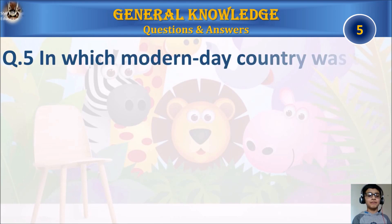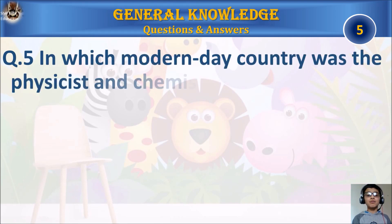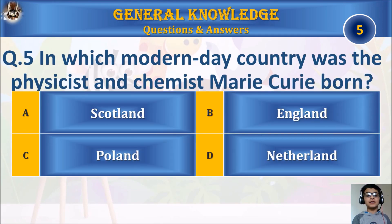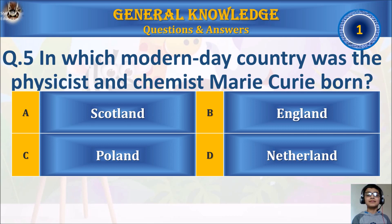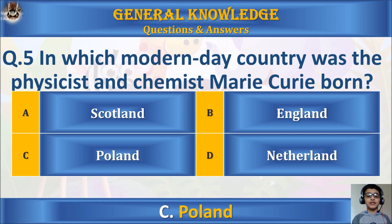Question 5: In which modern-day country was the physicist and chemist Marie Curie born? A) Scotland, B) England, C) Poland, or D) The Netherlands? Your time starts. The answer is C) Poland.